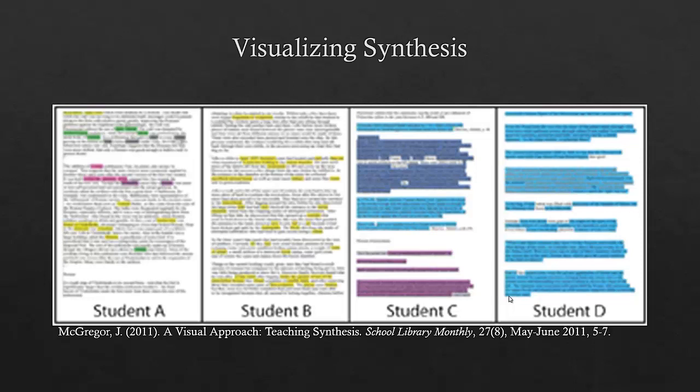Student C is more of an example of synthesis because you can see there are multiple sources, but once again they're not using their own voice. This is just copy-and-paste patchwork and is not really creating something new because there's no own voice serving as a guide. Student B is getting better at using their own voice, however it's not really synthesizing anything because it's only using one source — which could be okay for something like a book review. True synthesis is what student A has created: multiple sources used only as support for their own voice and their own assertions. That's really the goal when creating and doing research.